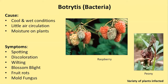Botrytis is also found on many different types of plants. It is a fungus caused by cool, wet conditions, which we have a lot of in springtime, and little air circulation. Just like powdery mildew, moisture on the plants is a problem—try to make sure that as you go into evening and nighttime your plants are dry. When it's raining you can't always control that, but you can control it when you're using irrigation.